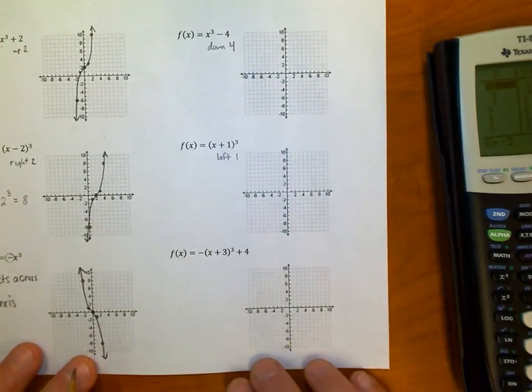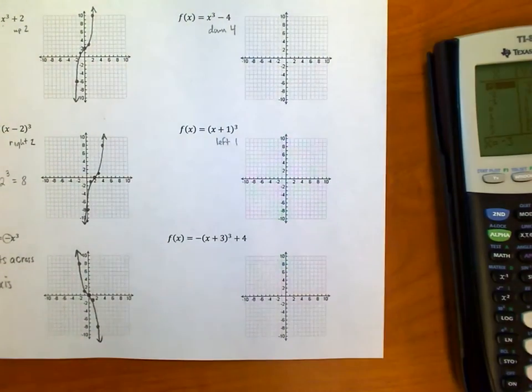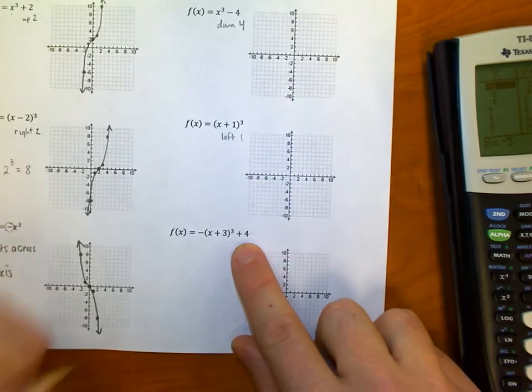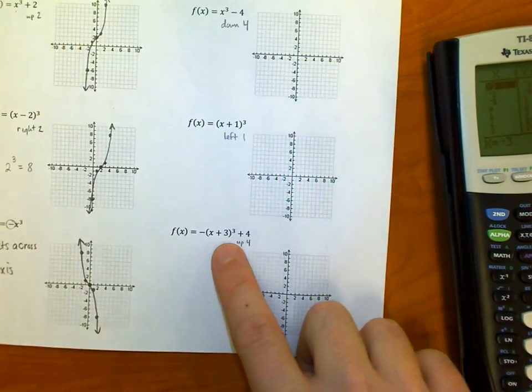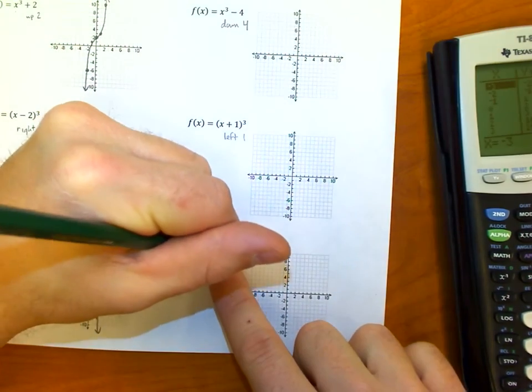And so then one more, to round things out. Let's put them all together. The 4 here moves it up 4, the 3 here moves it left 3.